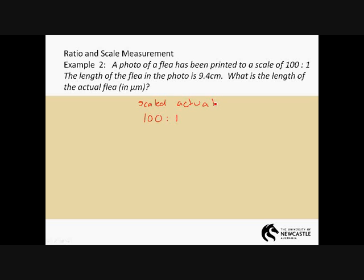So the question says, the length of the flea in the photo is 9.4 centimeters. What is the length of the actual flea in micrometers? Well, the actual flea, so that's the question part. We want to know this. The scale is 9.4 centimeters. So once again, we look at the relation between these two. How did I get from here to here? Well, divide by a hundred. Basically, it's saying that the actual is one hundredth of what you see in the picture. To get from this side to this side, a hundred divided by a hundred will give me the one. Whatever this number was, I would have divided by itself to give me one.